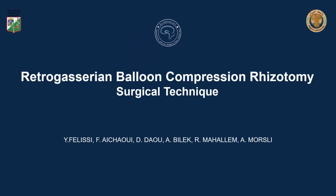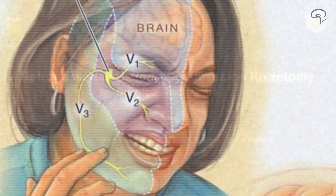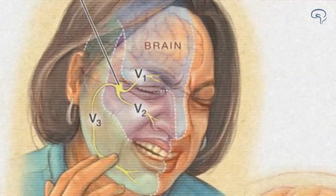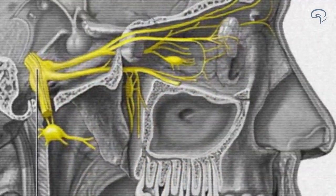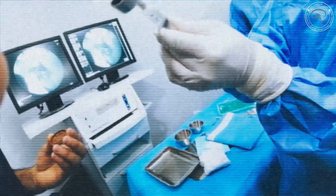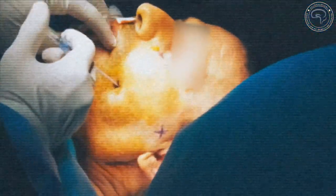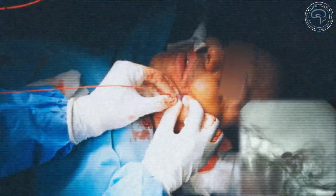This video reviews technical nuances for the balloon within the Gasserian ganglion for compression rhizotomy. The trigeminal nerve is perhaps best known for the extreme pain of trigeminal neuralgia, often described as one of the worst pains that can afflict humans. Percutaneous procedures for trigeminal neuralgia involve controlled damage to the trigeminal nerve root with the goal of relieving pain. These procedures are performed via foramen ovale puncture. We present the case of a man in his 40s with left-sided V2 and V3 medically refractory trigeminal neuralgia.